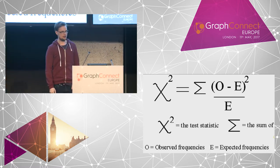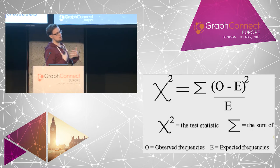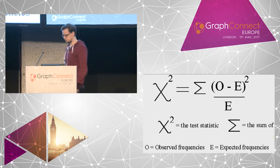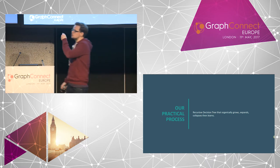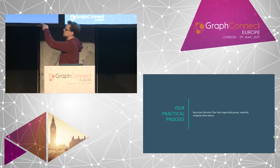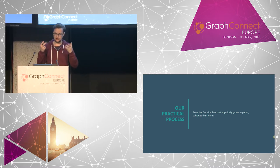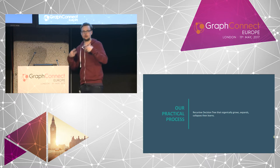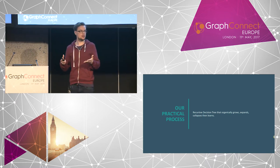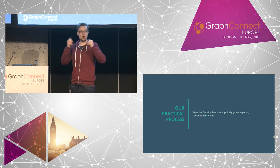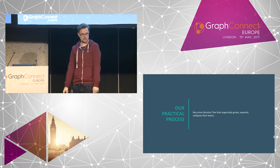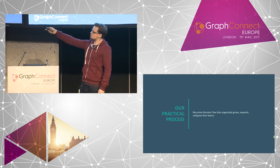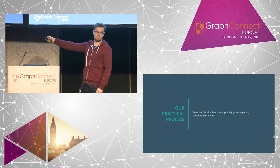We use these common techniques to build up our decision engines. To sum up what our end design ended up being: we built a recursive decision tree that organically grows, expands, collapses, and then learns. When recursion is in place, there are moments where it's expanding, collapsing, expanding again — a lot of processing is going on to make decisions. The part where machine learning comes in is where we start to learn, and that's where neural networks start to be a really good tool in our tool belt.